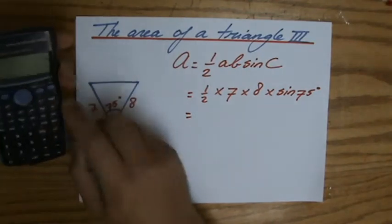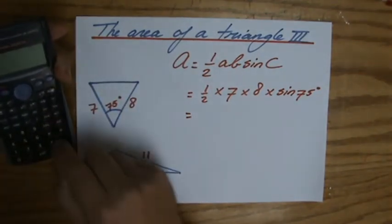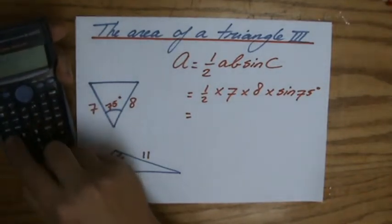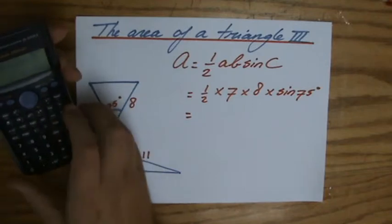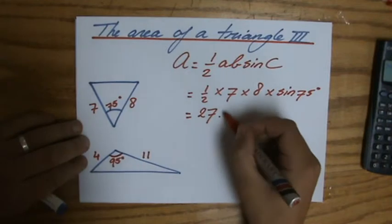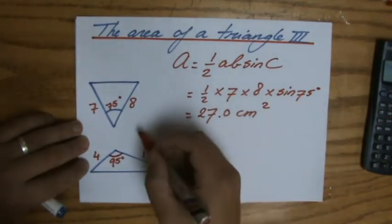It shows I understand, it shows I'm in control, it gives me a good feeling as well. Now I grab my calculator, sine of 75 equals, and to three significant figures, 27.0. Let's say all those units are centimeters, so centimeters squared.